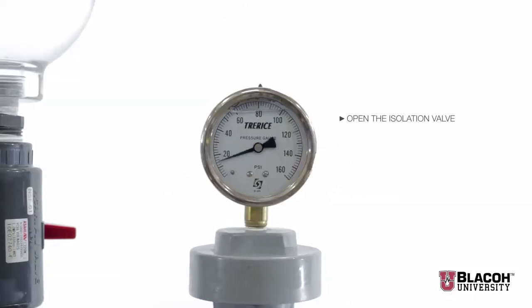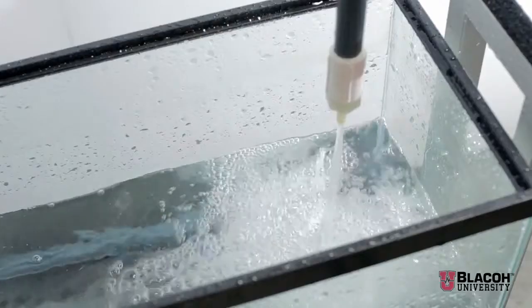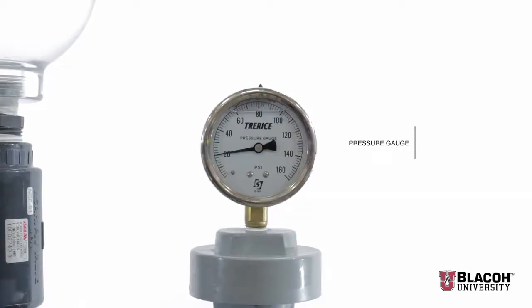As we open the isolation valve and place the dampener in the system, we see a smooth flow. We can see the gauge is now at 20 psi.